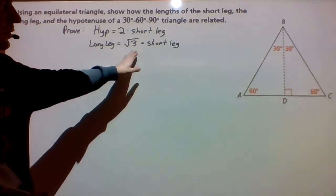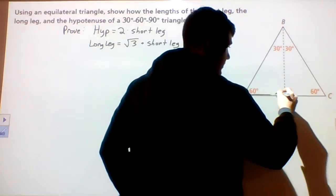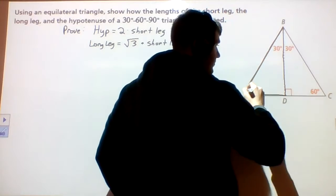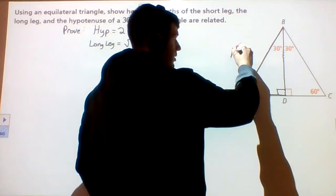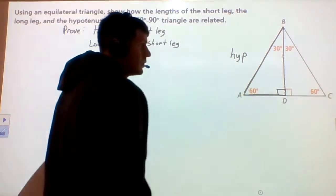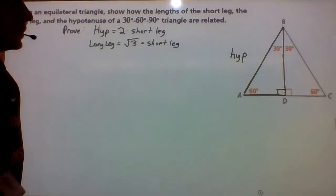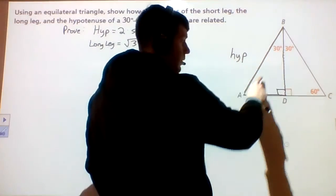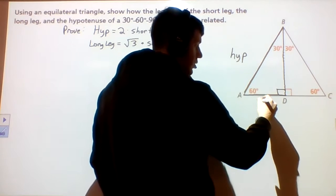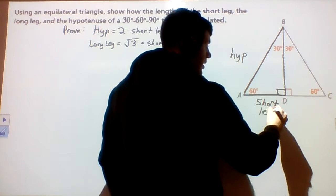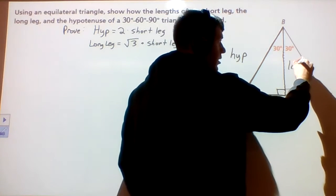And the long leg is equal to the square root of three times the short leg. Looking at our 30-60-90 triangle, we know the hypotenuse is the side across from the right angle. The shorter side is going to be across from the smaller angle. 30 degrees is smaller than 60, so that's our smaller angle, and across from that is our short leg. 60 degrees is our larger angle, so across from 60 would be our long leg.